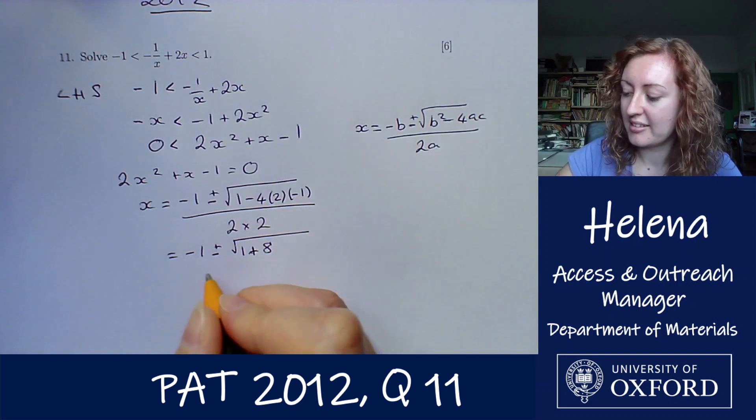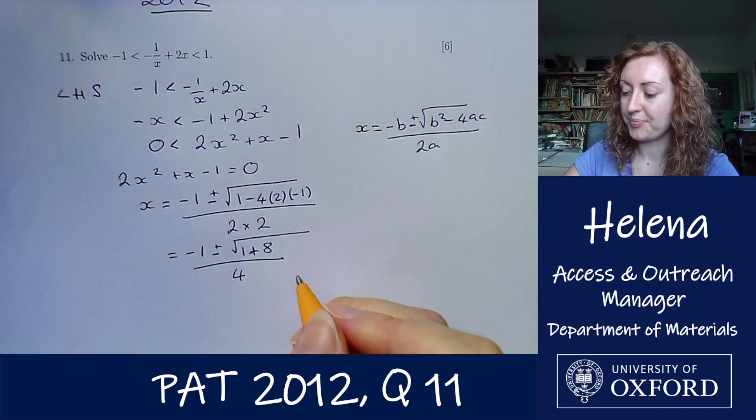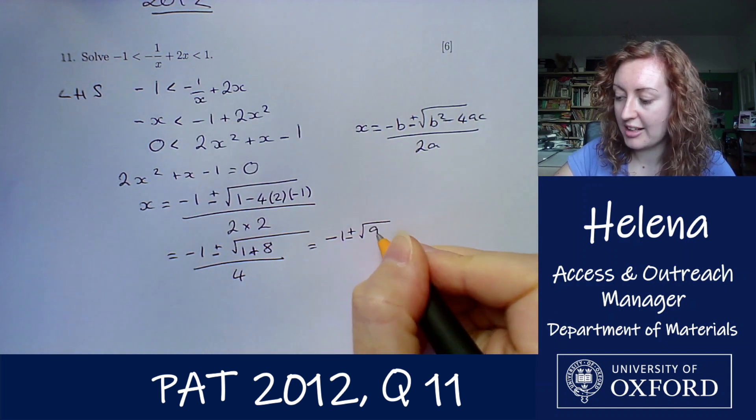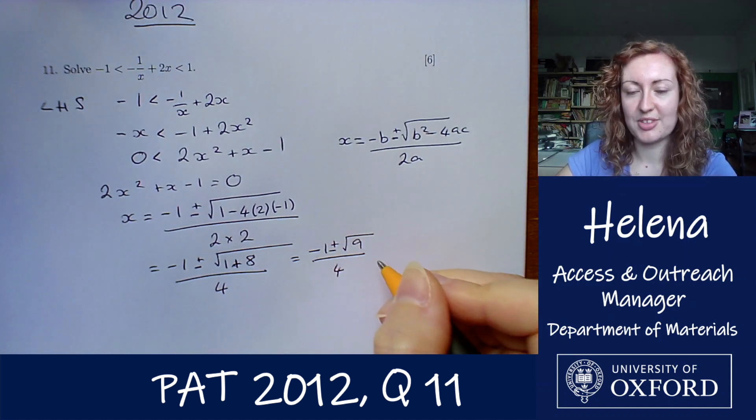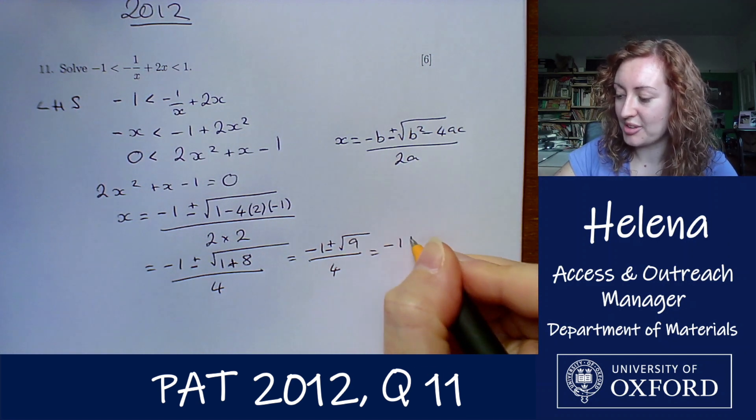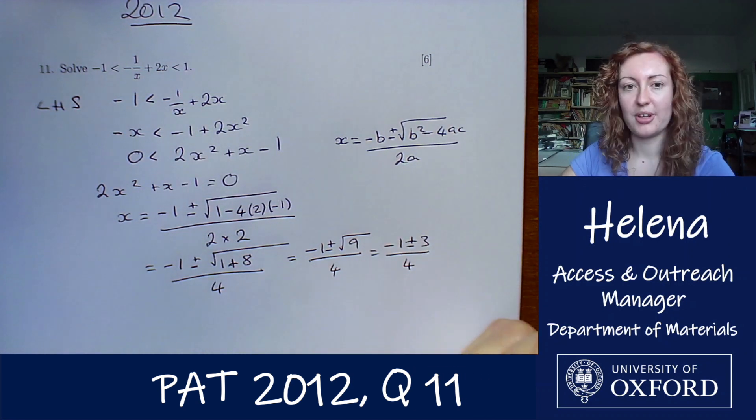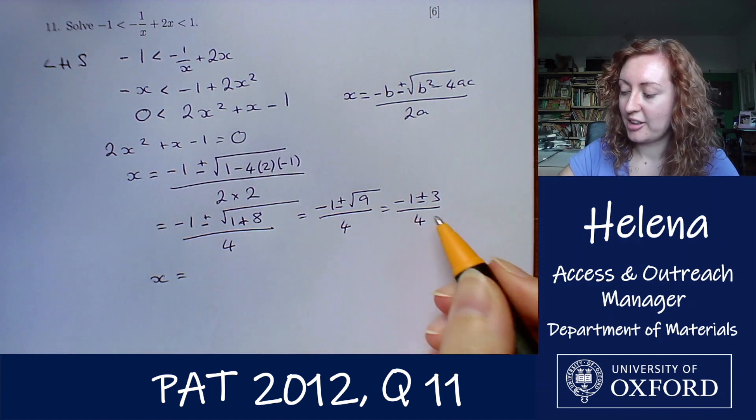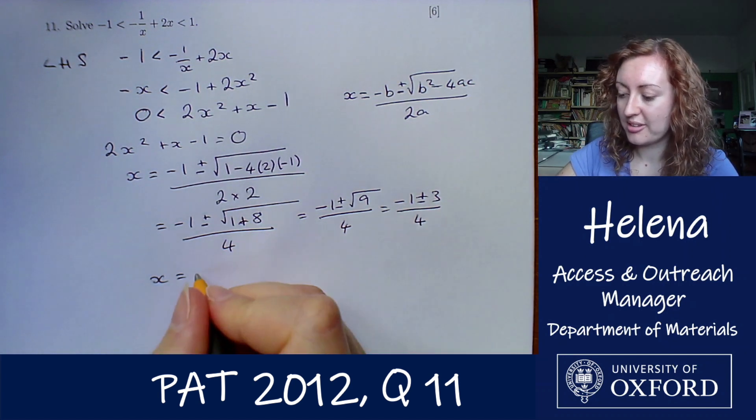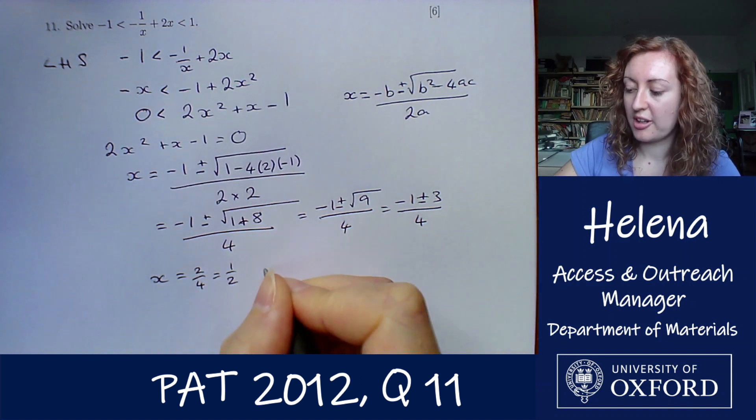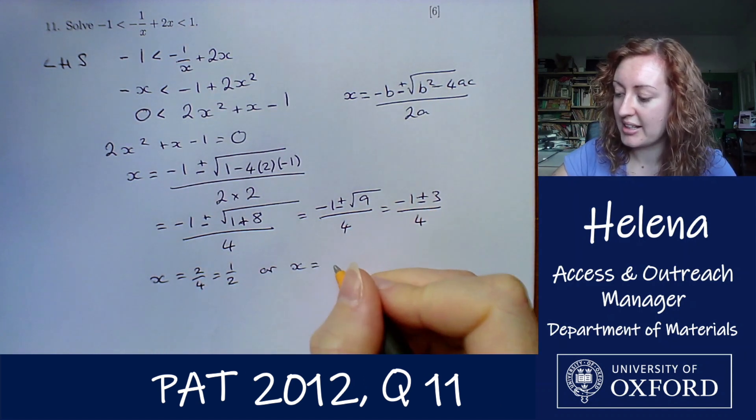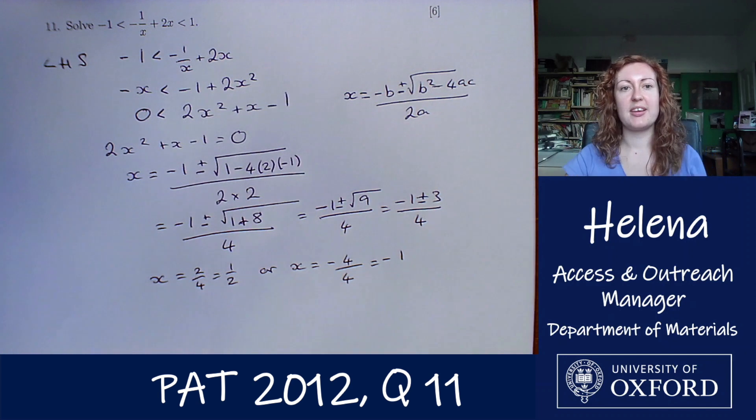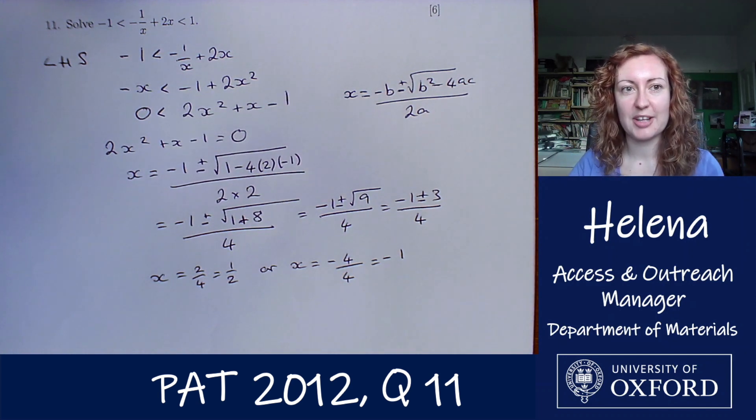Which is equal to minus 1 plus or minus the square root of 9 over 4. The square root of 9 is 3, so we've got plus or minus 3 all divided by 4. So the two roots for this particular quadratic would be minus 1 plus 3 which is 2 divided by 4 which is a half, or x equals minus 1 minus 3, so minus 4 divided by 4 which equals minus 1. Those are the boundary values for this inequality from the left hand side.